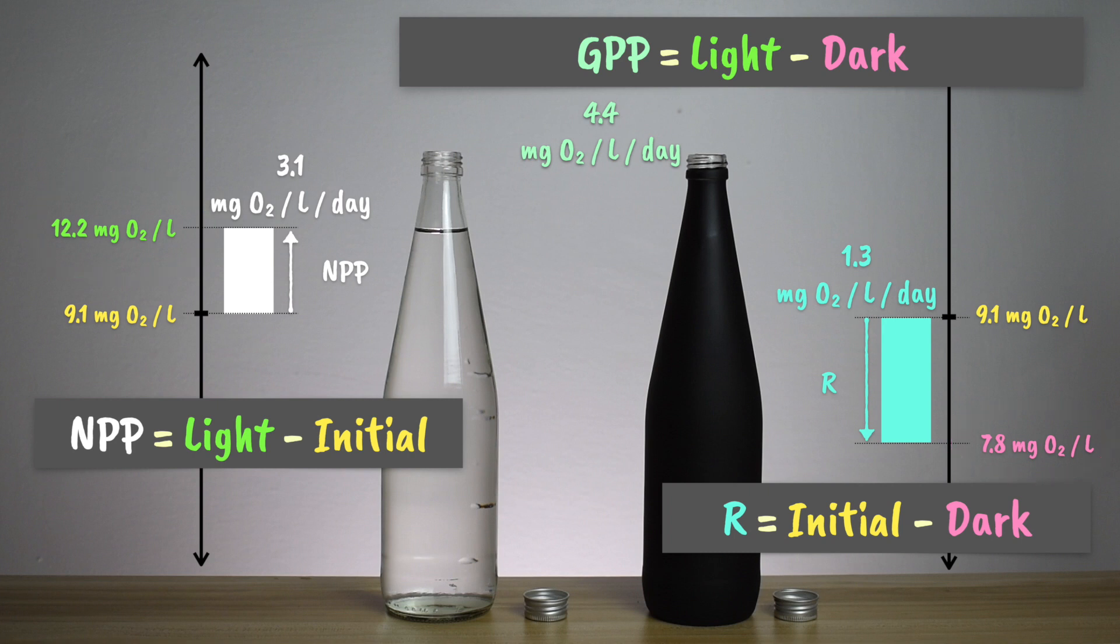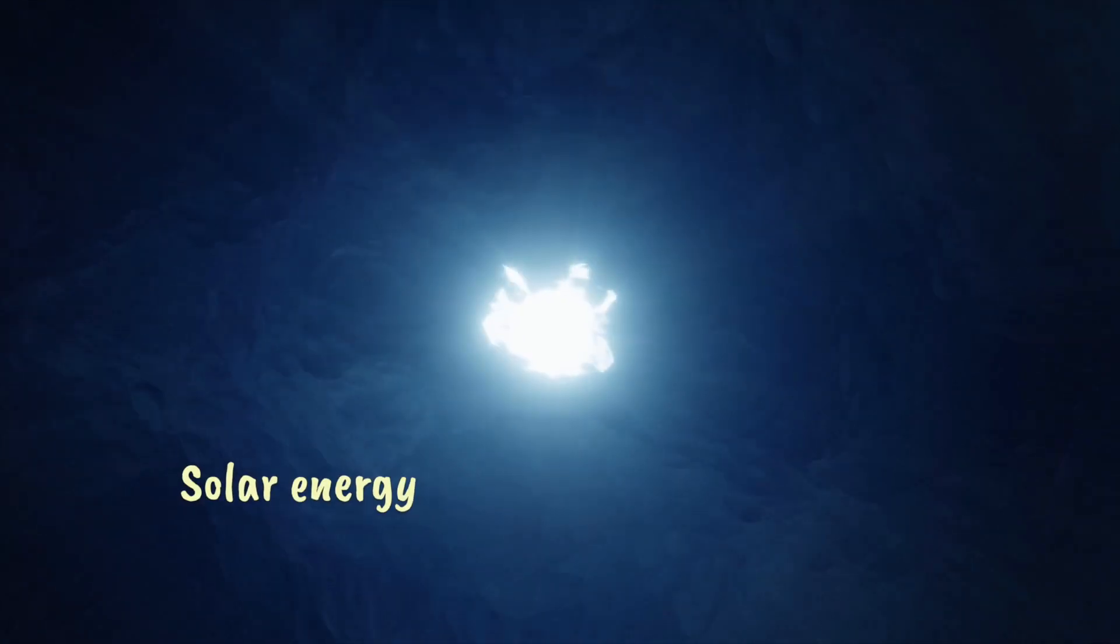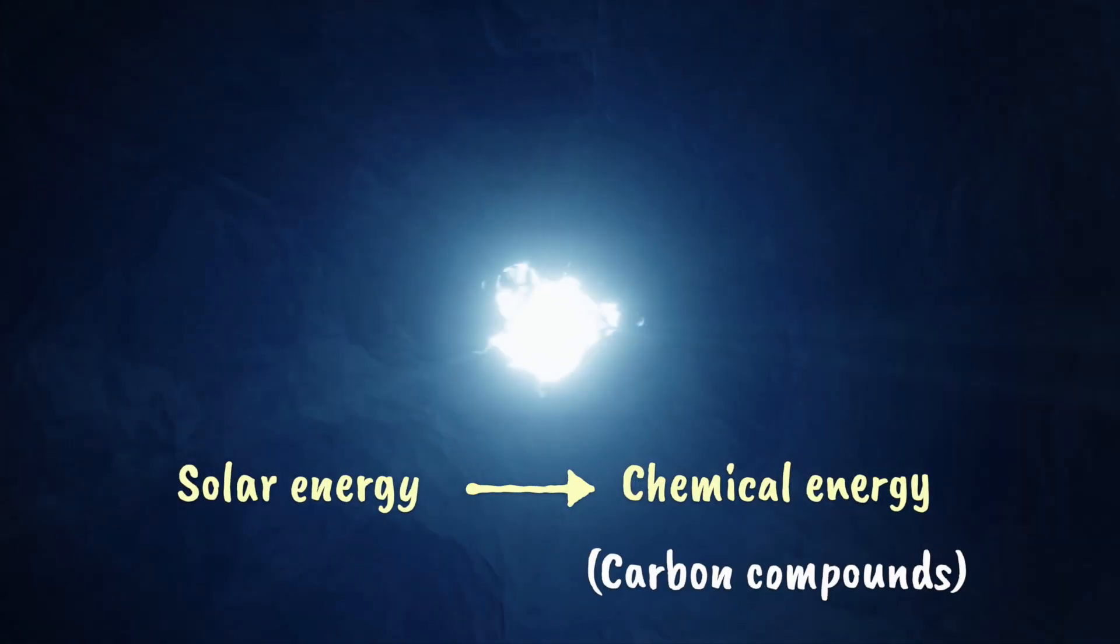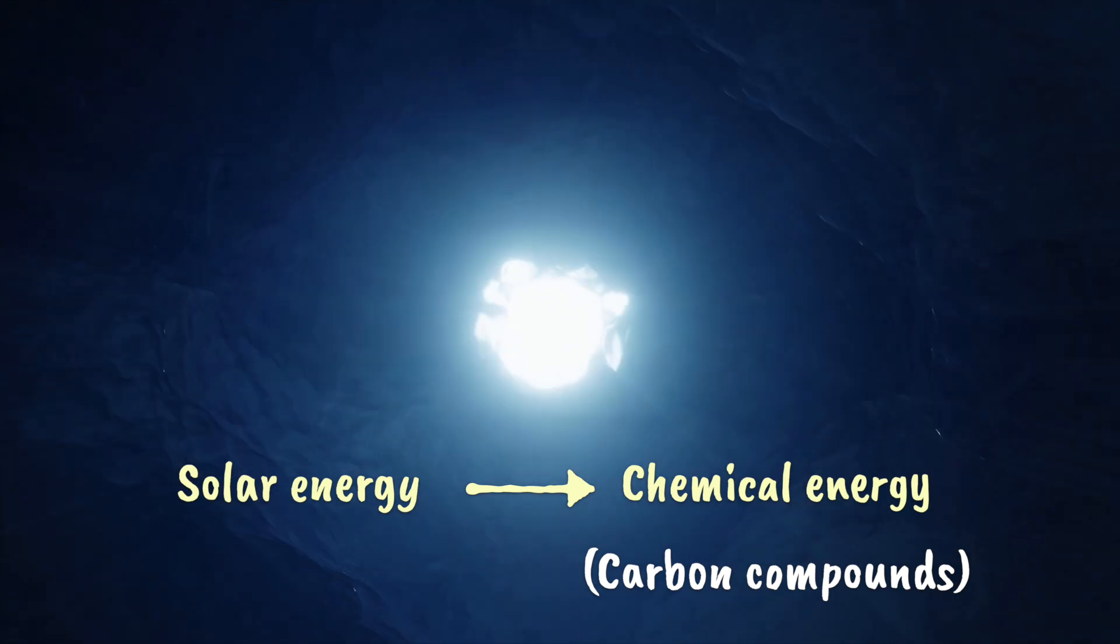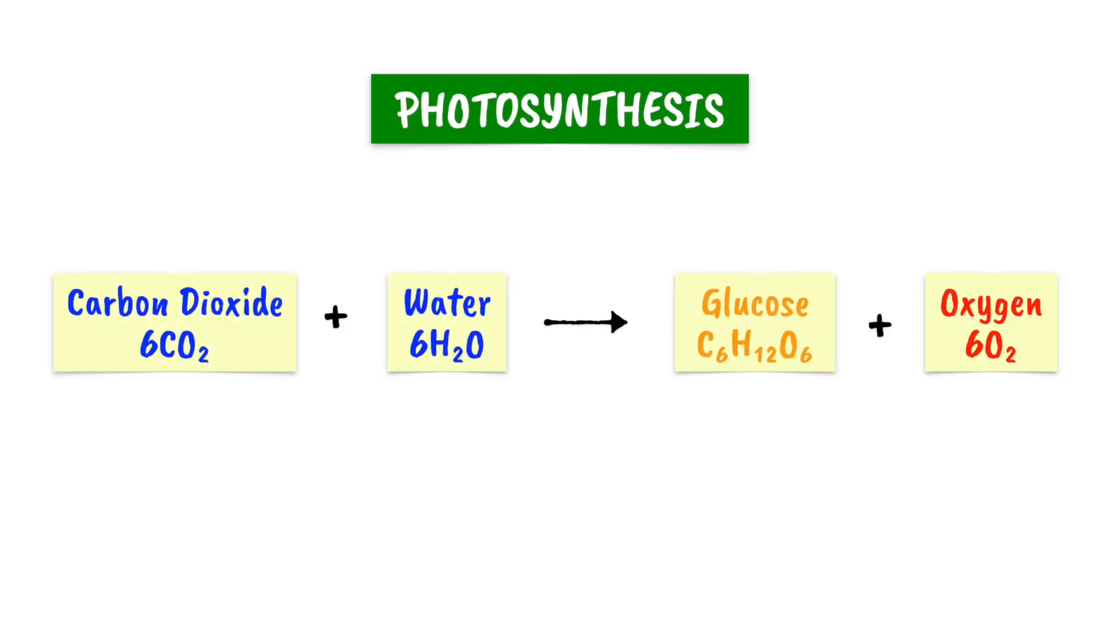Remember that primary productivity is the conversion of solar energy into chemical energy in the form of carbon compounds, so it would usually be expressed in terms of carbon compound formation rather than oxygen formation. In photosynthesis, there are 0.375 units of carbon produced for every one unit of oxygen.